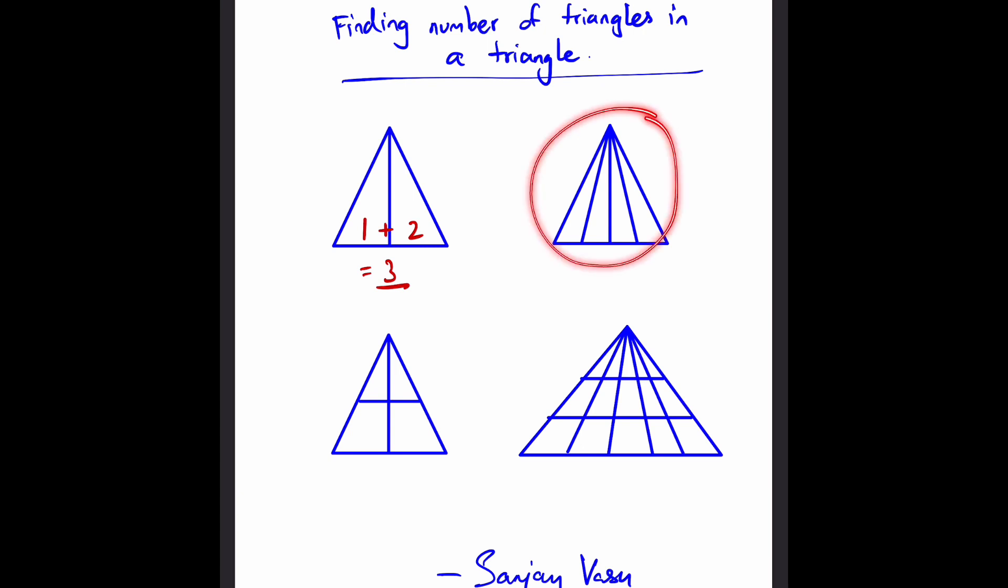Now we can do it for a slightly more complicated one. Notice that all of these lines are originating from the top vertex. If they do from the top vertex, only then this trick which I've taught it works. Over here, the base is split into four parts. So you do one, two, three, and four, add all four of the parts, and we get 10. So there's 10 triangles in this one.